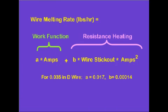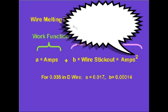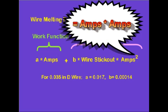The second term is the resistance heating energy that determines how hot the wire tip is at the arc interface. This is expressed as another constant, B, multiplied by the wire stick out measured in inches, times the amperage squared. Or you can say, amps times amps.